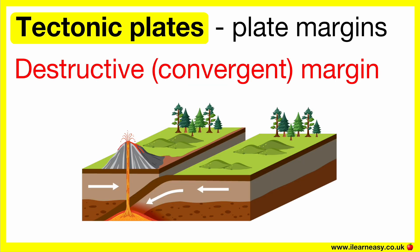Destructive plate margin, also known as convergent. This is when the plates move towards each other, resulting in the plates smashing against each other. It can either push both upwards, which forms fold mountains, or one plate goes under and the other is pushed up, forming deep trenches or resulting in earthquakes.